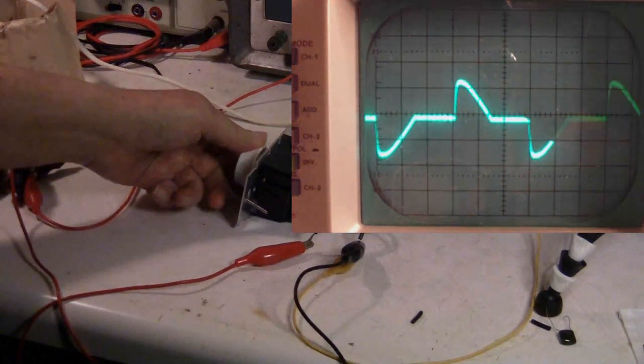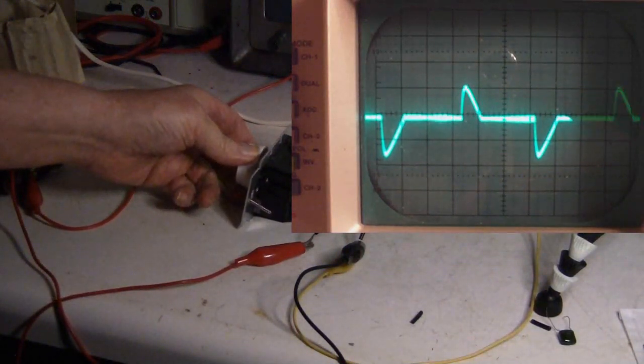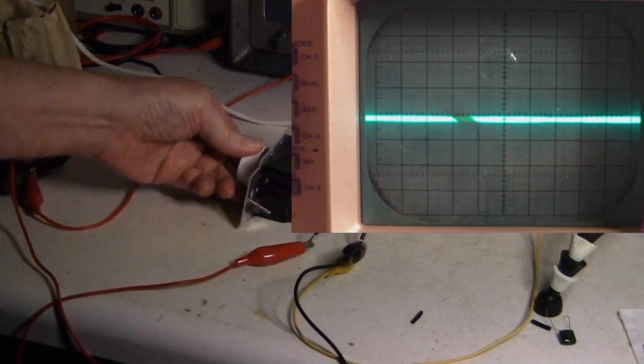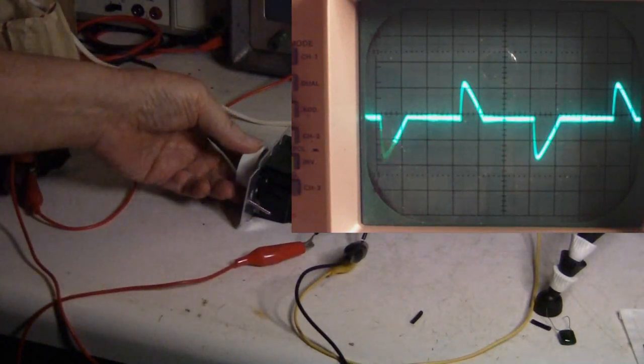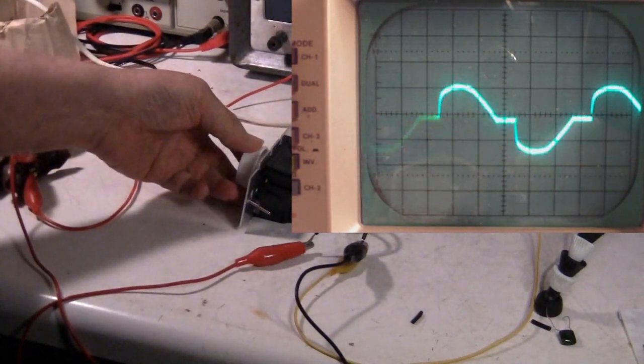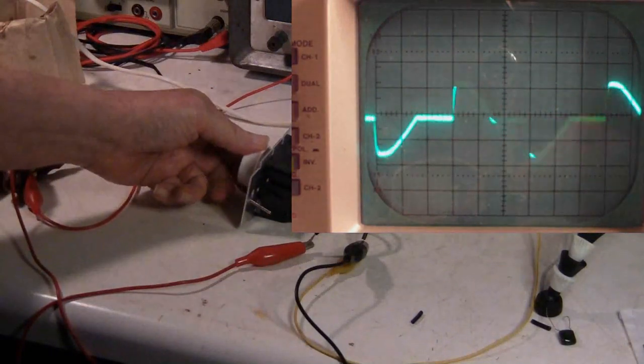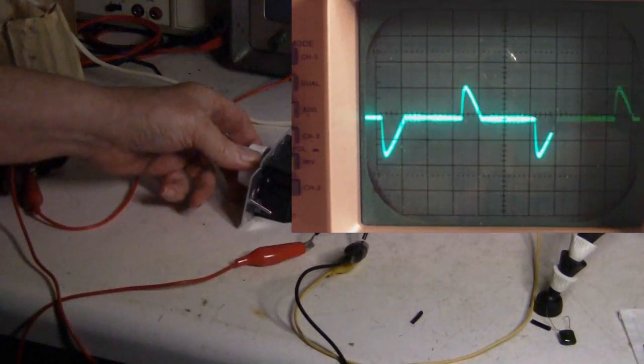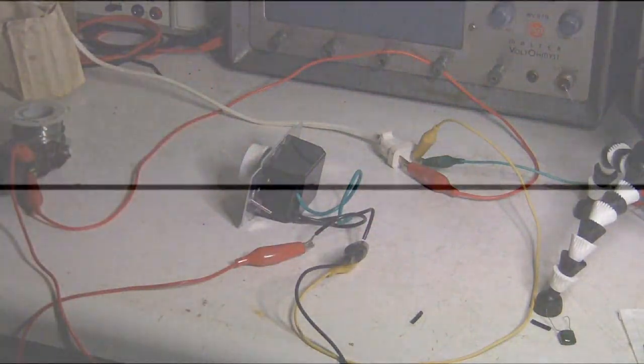And now I'm lowering the dimmer and the sine wave decreases, and I just turned it off here. Now it's back on and we'll go through this cycle again. This is about halfway, and now we're up all the way. About halfway, and now this is as low as the dimmer will go.